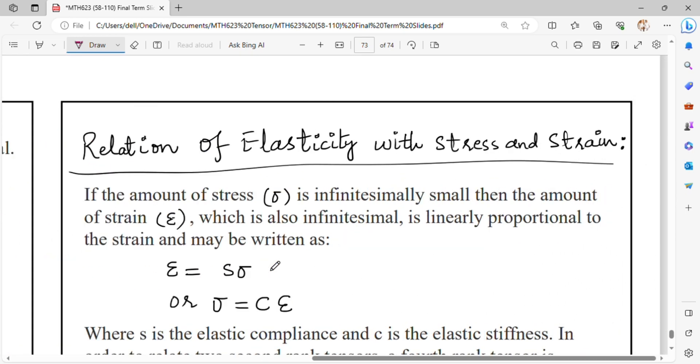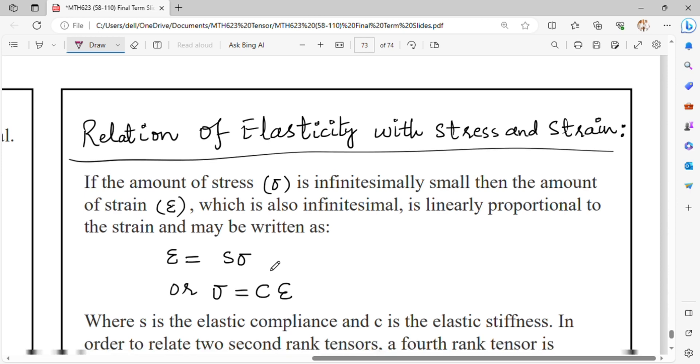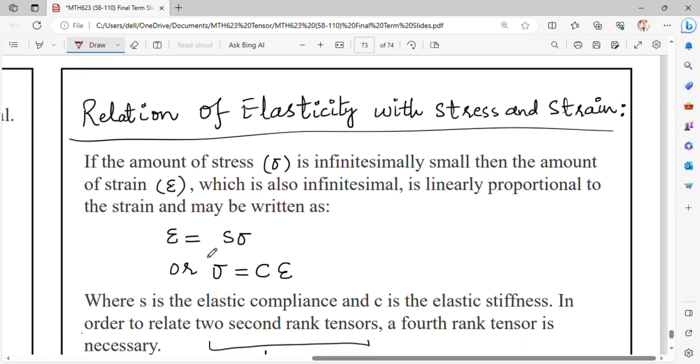The relationship in elasticity involves infinitesimal deformation. If the stress is small, the strain is also small. They are linearly proportional and can be written as epsilon equals S sigma, where S is the elastic compliance, or as sigma equals C epsilon, where C is the elastic stiffness.